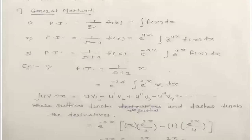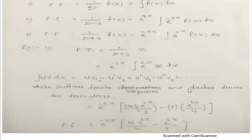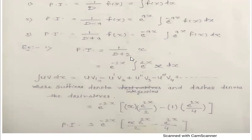Example: Find the PI for 1/(D+2) · x. Here the function is x, a linear function, and the factor is D+2, meaning a = 2. So use the third formula. The formula gives e^(−2x) · ∫e^(2x) · x dx.